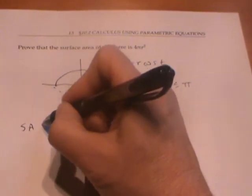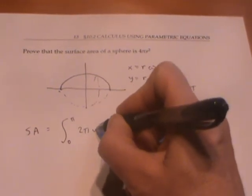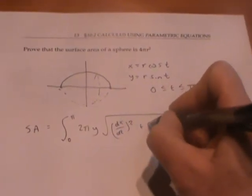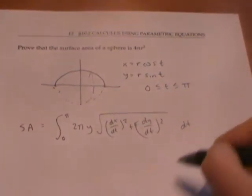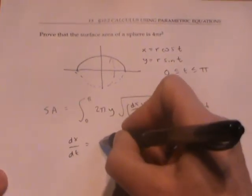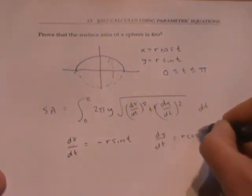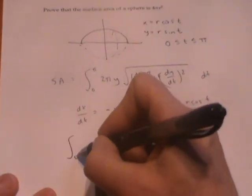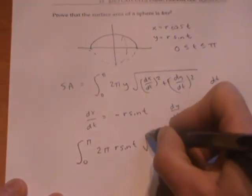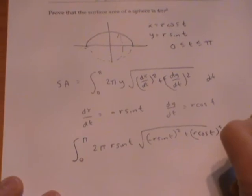Alright, so I want to use my formula: integral from 0 to π of 2πy, the radius, times a little piece of arc length. My dx/dt is just -r sin(t) and my dy/dt is r cos(t). So that gives me 2π times y, which is r sin(t), times the square root of (-r sin(t))² plus (r cos(t))² dt.